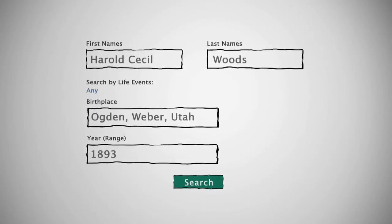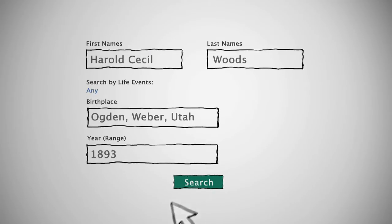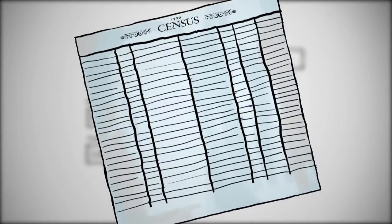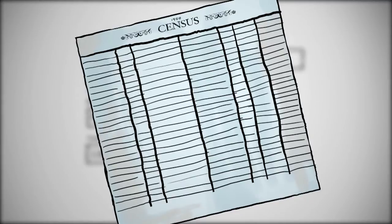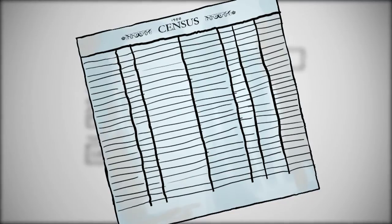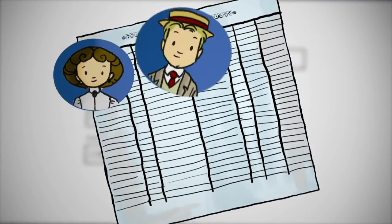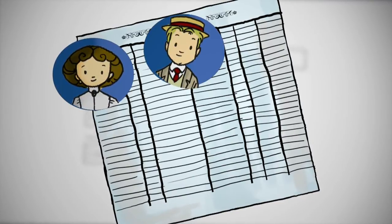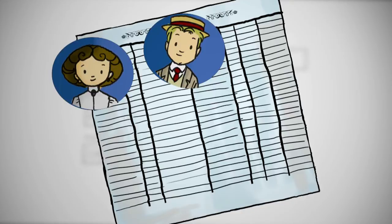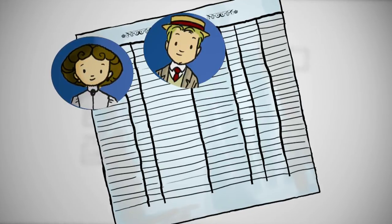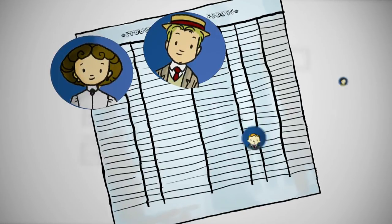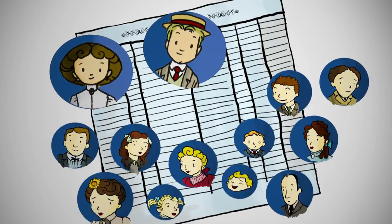Then I tried another search. This time I added Harold's birth date and birth location. The top result was a census record from 1900. From this gem, I could see his parents' names, birth dates and locations, and information on 11 brothers and sisters.